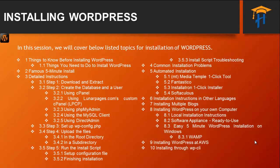Starting with the things to know before installing WordPress, things you need to do to install WordPress, then the famous 5-minute install method, detailed instructions for download and extract, create the database and user with various methods like using cPanel, using LunarPages.com's custom cPanel, using phpMyAdmin, using MySQL client, using DirectAdmin, set up WordPress configuration files, upload the files in the root directory or in the sub-directory, running the install scripts, set up configuration files, finishing installations, then install script troubleshooting common installation problems, and automated installations.